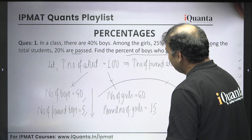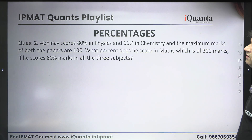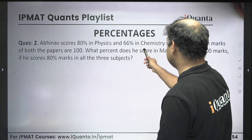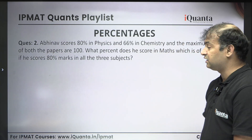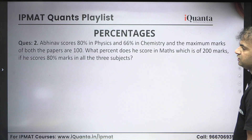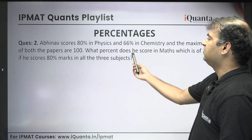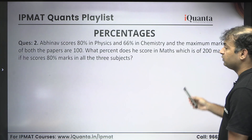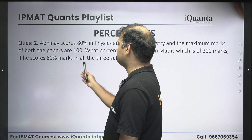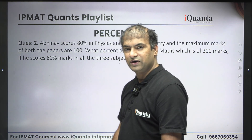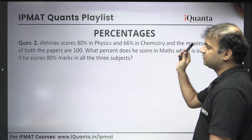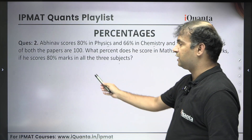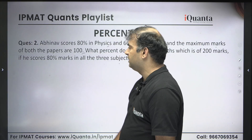A very nice question indeed. Let's move to the next question. The next question says that there is a boy Abhinav who is scoring 80% in physics and 66% in chemistry, and the maximum marks of both papers are 100 each. Then they ask what percent he scores in maths, which is of 200 marks, if he scored 80% marks in all three subjects. So he scored 80% in physics and 66% in chemistry, and maximum marks of both papers are 100.